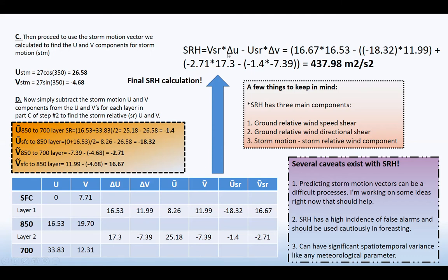Storm relative velocity equals the storm relative V component of the initial layer. So this will be this layer, the surface to 850 or layer one, this will be layer one, this whole chunk right here. And then this will be layer two, which is this. Okay. So 16.5 or excuse me, let's follow the equation VSR. So VSR of the first layer, 16.67 times delta U, which would be 16.53 minus USR, which is going to be negative 18.32. That goes here times delta V, which is 11.99. That's here plus this whole piece right here.